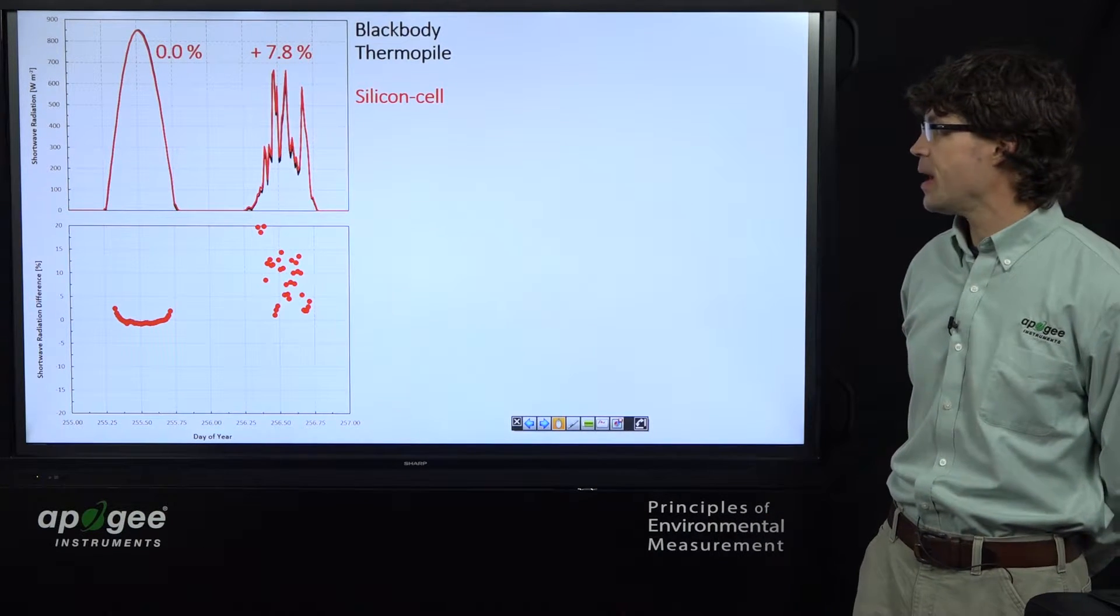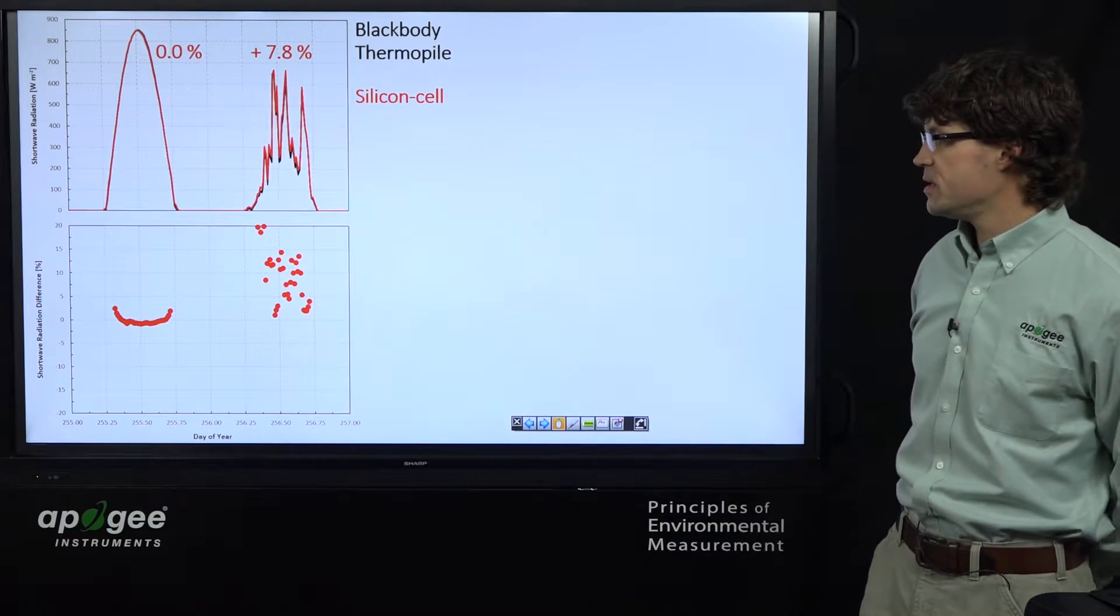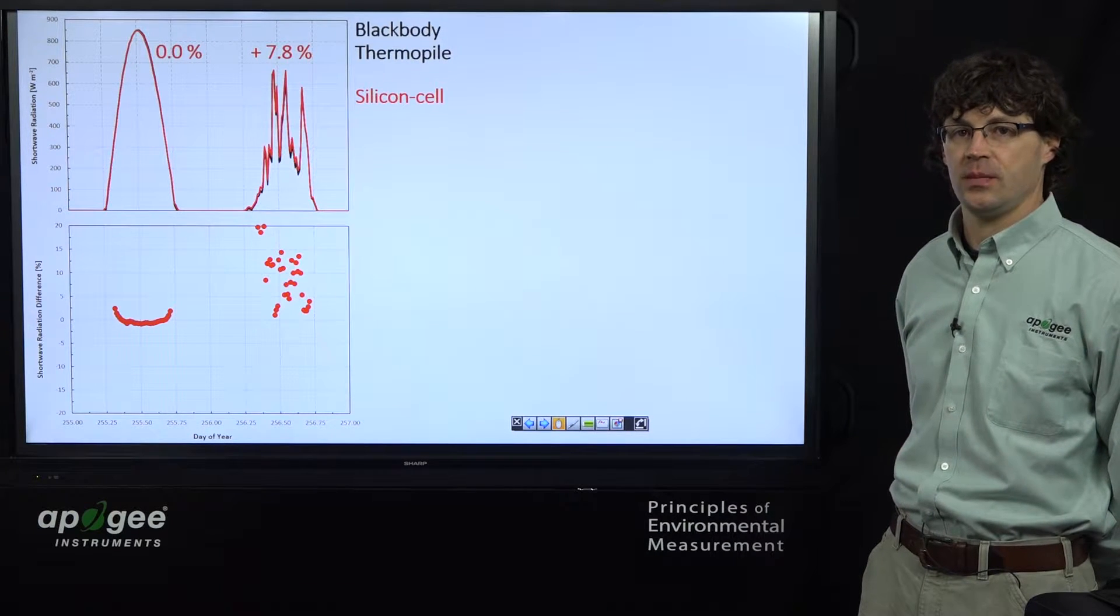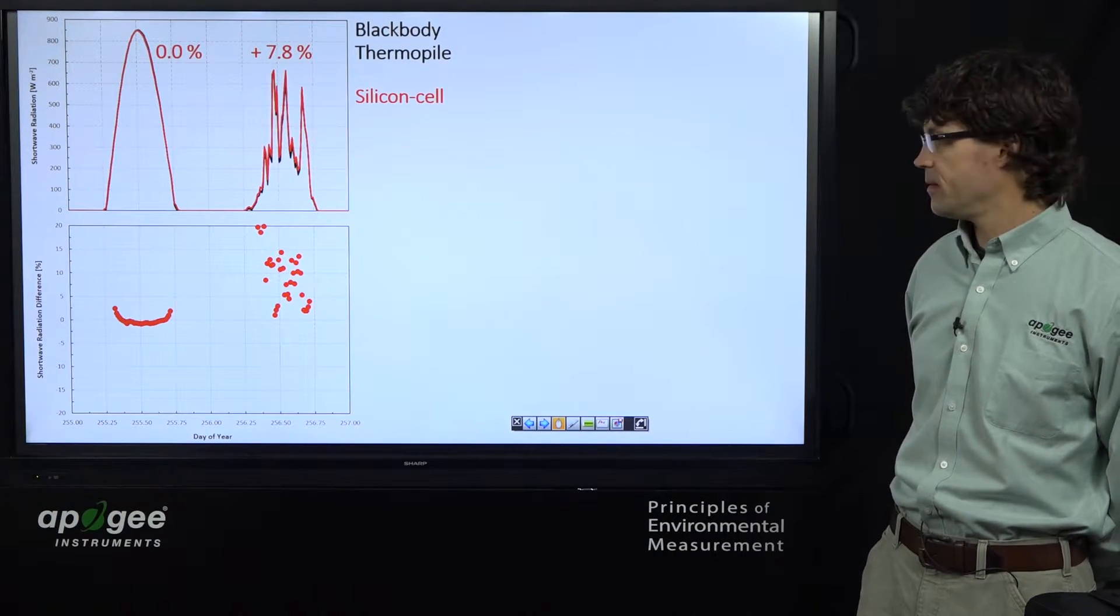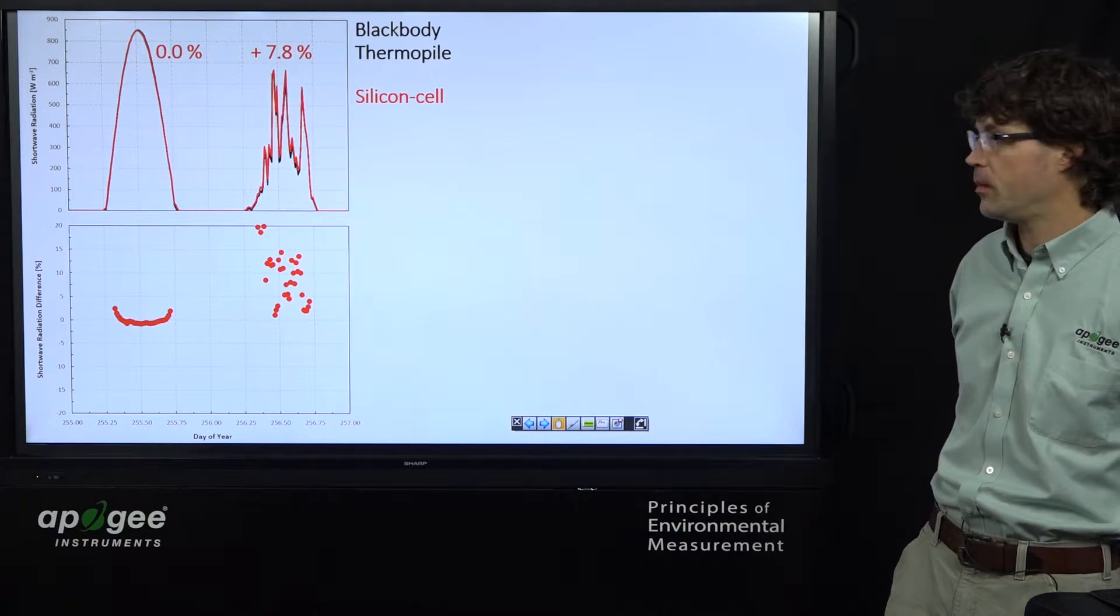On the cloudy day, however, there was about an 8% error. And you can see the percent differences in this lower plot here. These are 15-minute averages then compared relative to the secondary standard to provide an error measurement.